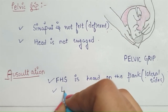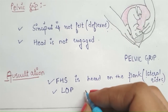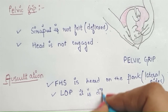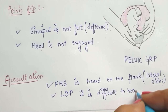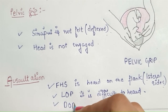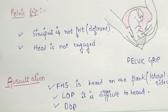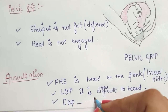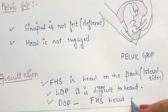Next is auscultation. Fetal heart sound is heard on the flank — on the lateral sides. In the case of left occipitoposterior position it is difficult to hear the fetal heart sound. In the case of direct occipitoposterior position, when the occiput lies over the sacrum, the fetal heart sound is heard at the midline.